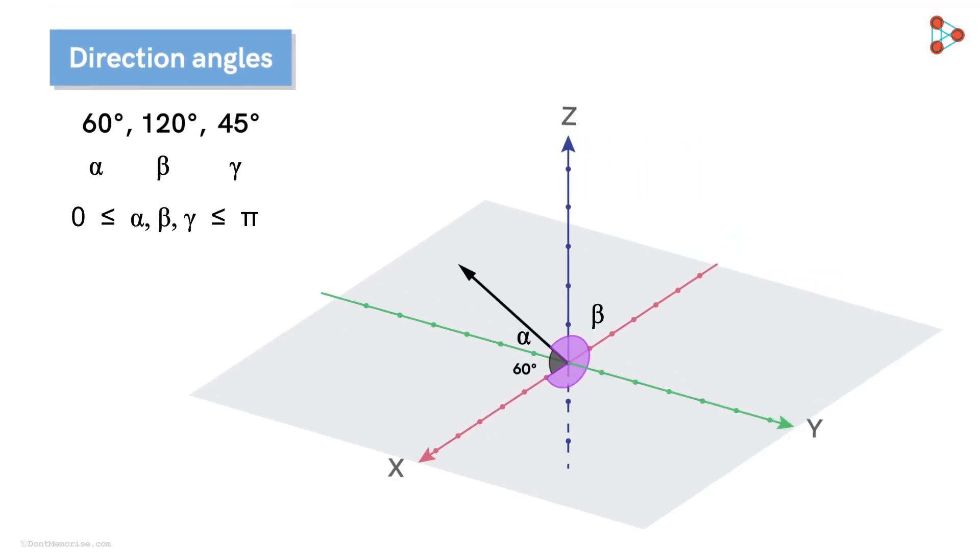In our last video, we have seen that the direction angles of a vector passing through the origin are the angles that it makes with the positive x, y and z axis.